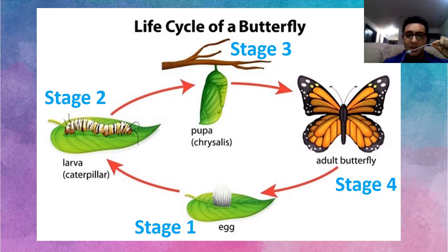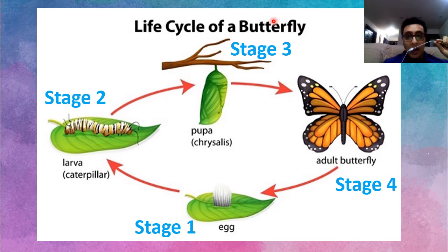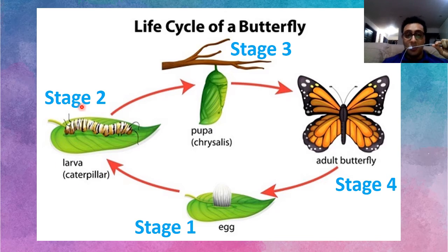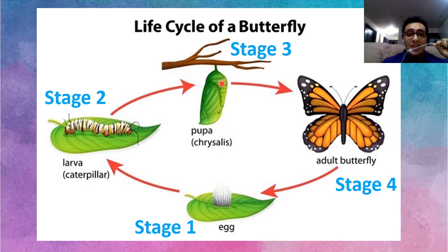Let's see more examples. Life cycle of a butterfly: stage one, egg; stage two, larva or caterpillar; stage three, pupa or chrysalis — that's when it goes to sleep; stage four, adult butterfly. For the frog: stage one, egg; stage two, tadpole; stage three, froglet; stage four, adult frog.